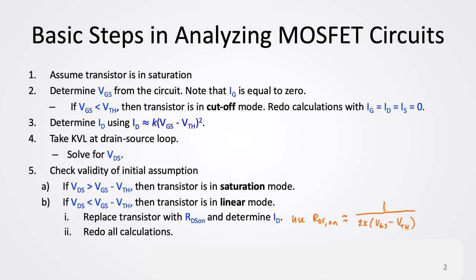Similar to the BJT circuits, we have a systematic way of analyzing MOSFET circuits. First, we assume that the transistor is in saturation. If it's in saturation, that means we can use the equation relating the drain current to the gate-to-source voltage.